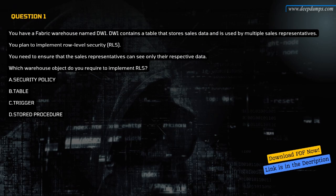Question 1. You have a Fabric warehouse named DW1. DW1 contains a table that stores sales data and is used by multiple sales representatives. You plan to implement row-level security. You need to ensure that the sales representatives can see only their respective data. Which warehouse object do you require to implement RLS? A. Security policy. B. Table. C. Trigger. D. Stored procedure.